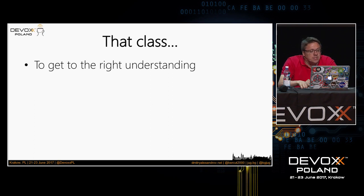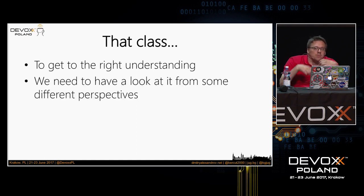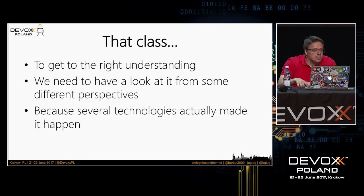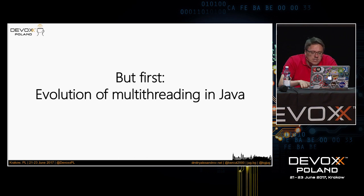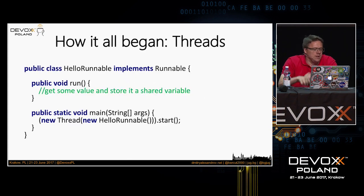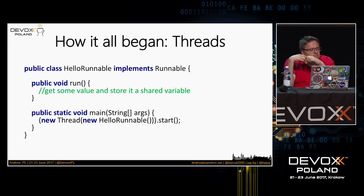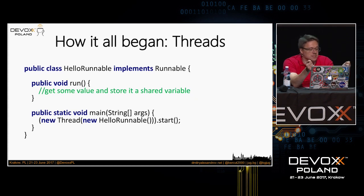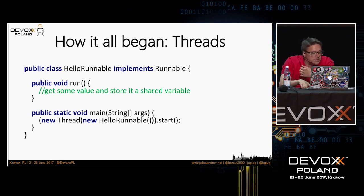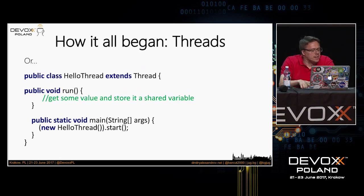To get this understanding of how we can do this in Java 8, we need to have a look at it from some different perspectives, because several technologies made it possible. We evolved to this position so now we can use it quite easily. Let us take a step back to history and see the evolution of multi-threading. All of us, mainly in universities, have begun to offload some work by starting new threads — it was very straightforward. We implement Runnable, define some work to be done in the run method, then start a new thread, or we can even extend Thread and do some work there.